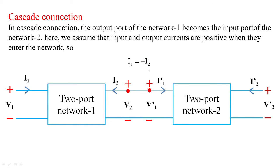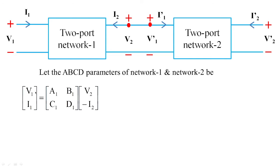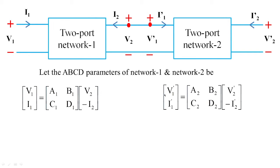If I frame the transmission line parameters — that is the ABCD parameters of network 1 and network 2 respectively — I am going to get V1 and I1 in terms of V2 and I2 as transmission parameters A1, B1, C1, D1. Similarly, looking at port 2, V1' and I1' will be expressed as A2, B2, C2, D2 in terms of V2' and I2'.